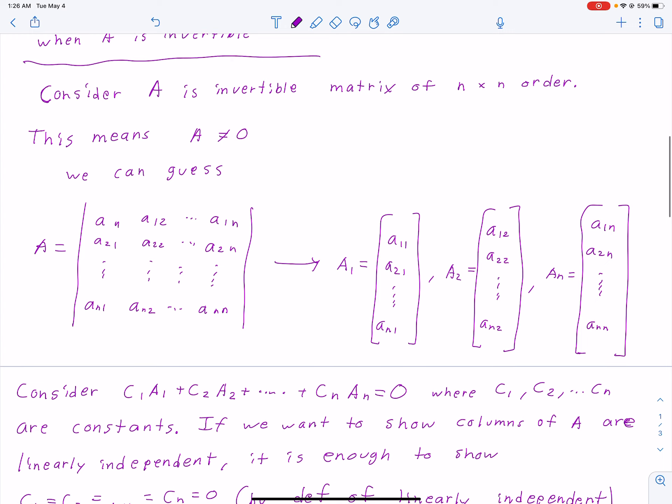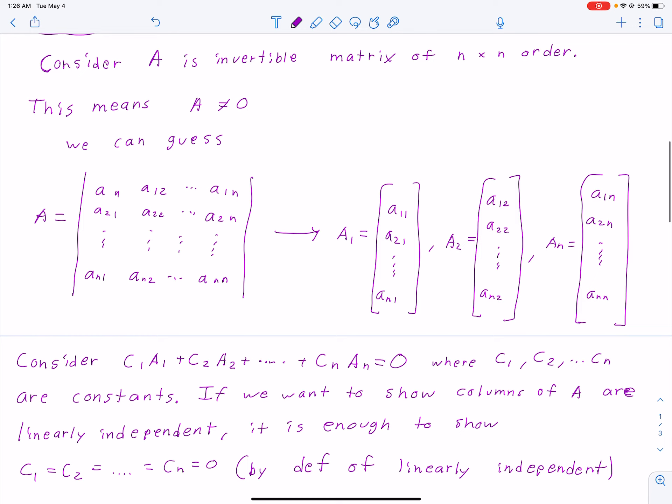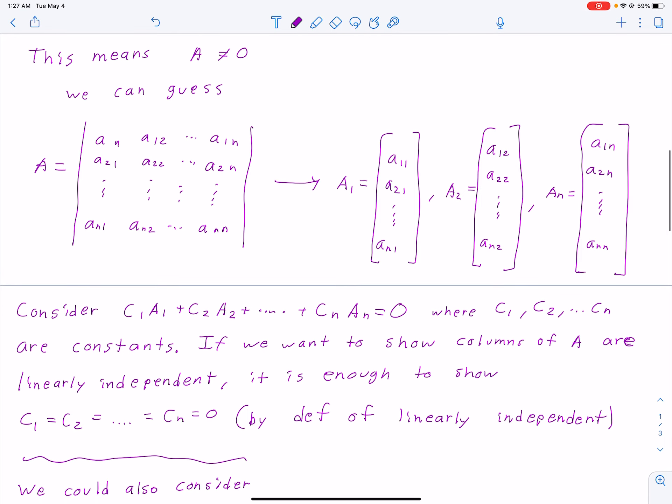Now we can consider A is an invertible matrix of n by n order. This means A cannot equal 0. We can guess this matrix, sort of like the setup.